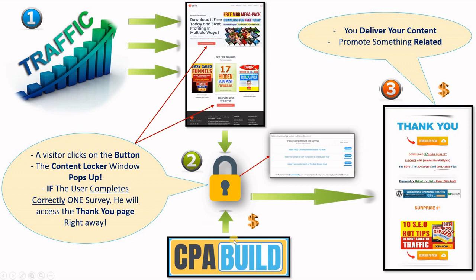Second, once the pages are created and published, we have CPA Build create the content locker — making sure it matches our content and provides the correct thank you page link, because people will be redirected to the thank you page. Third, the last step in the CPA Build locking process is taking the codes from CPA Build and embedding them in our landing page. There are two codes: one goes in the head section of the landing page, the second goes on the button.